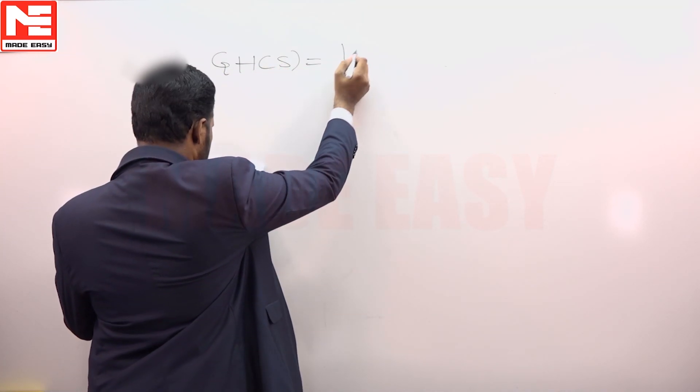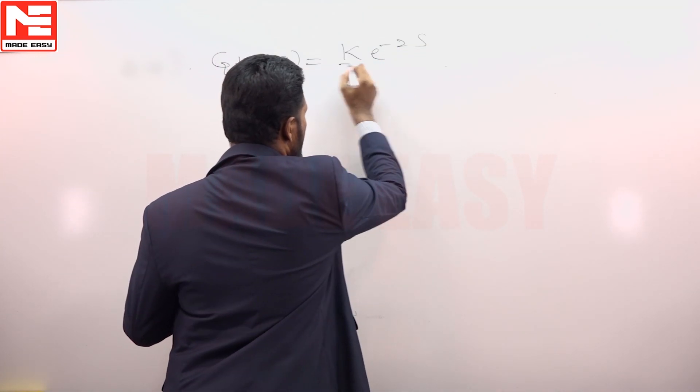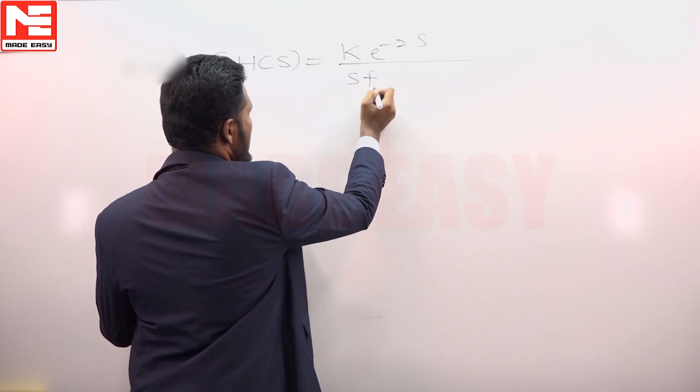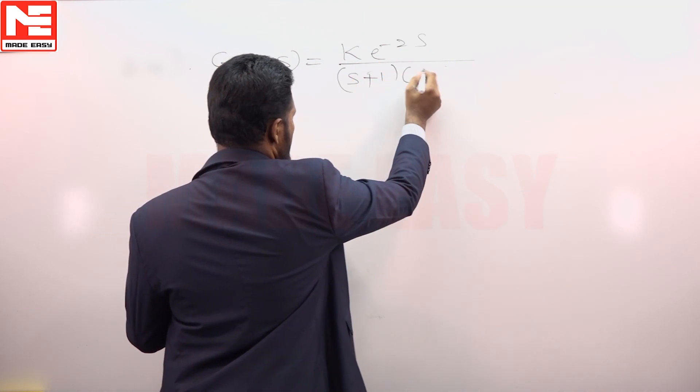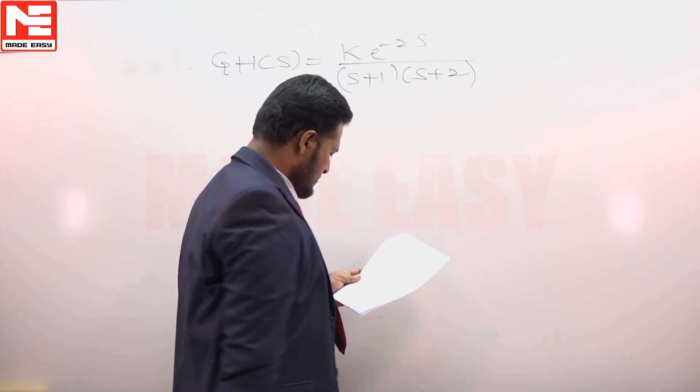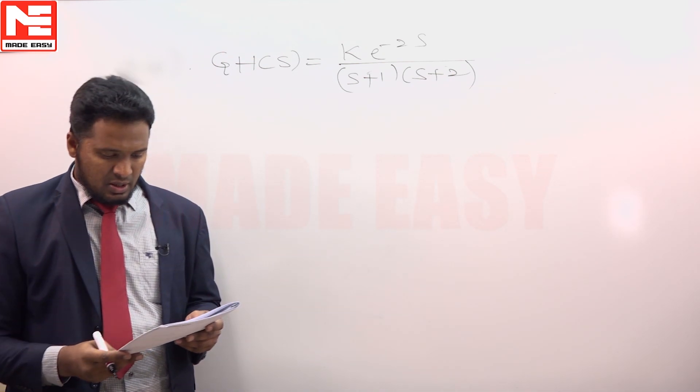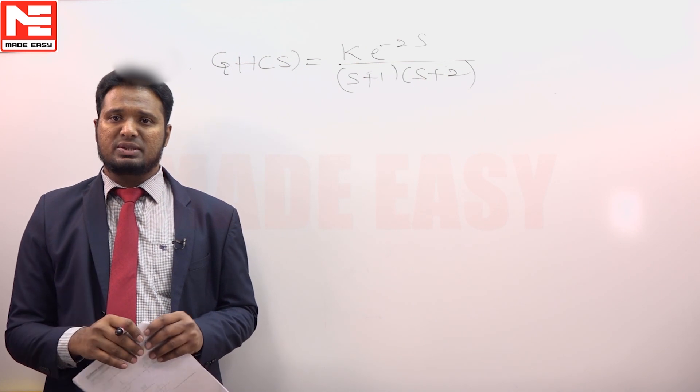Open loop transfer function of a system is K e to the power minus 2s upon s plus 1, s plus 2. Question is to find for what value of K the closed loop system is absolutely stable.